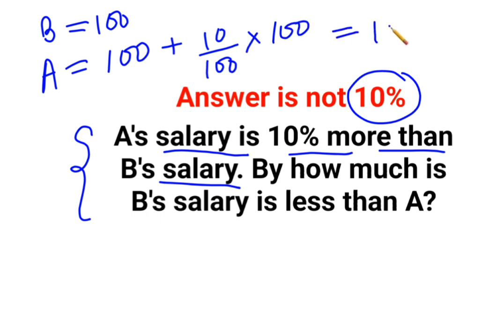So this gets you 100 plus this 100 and 100 cancels itself out. So we have 100 plus 10 that gets you A's salary to be 110.